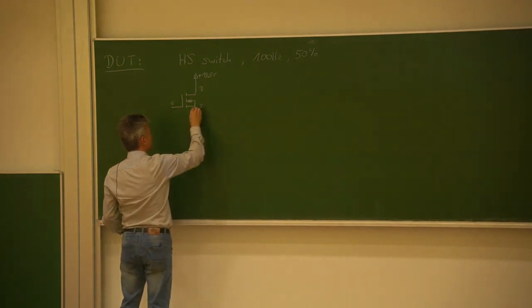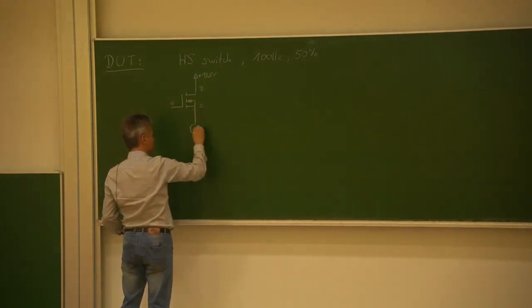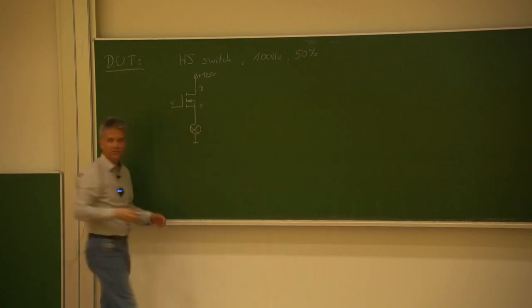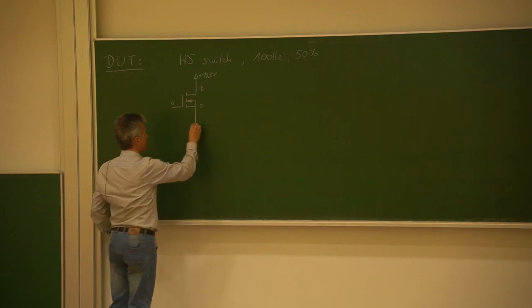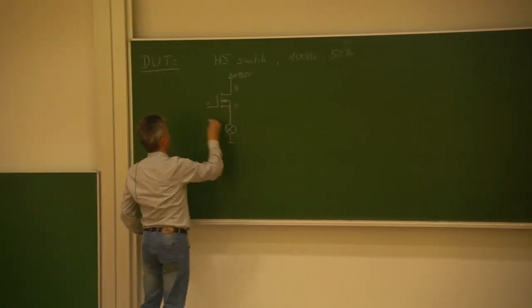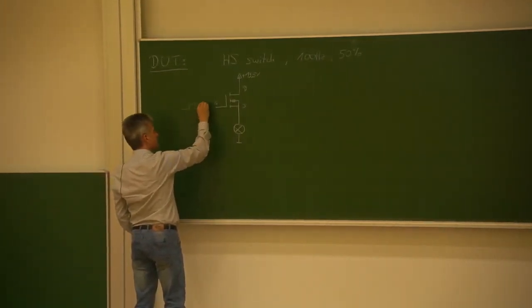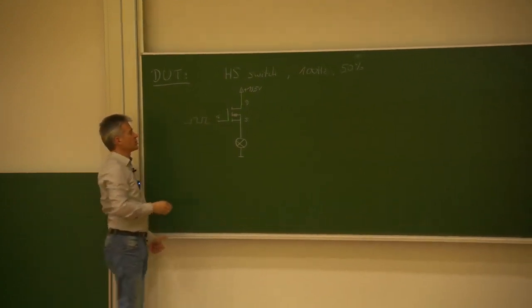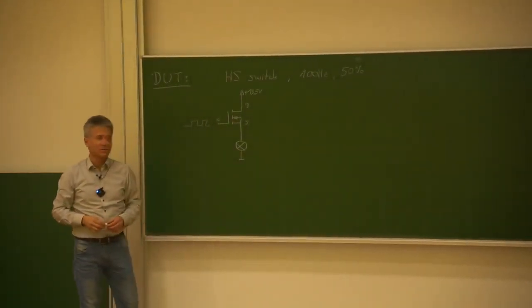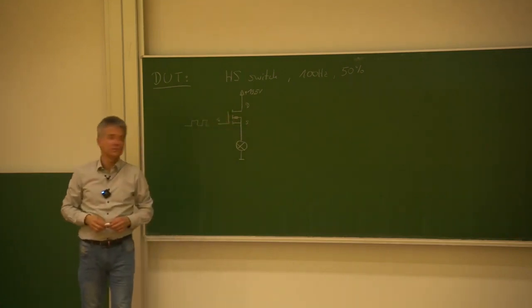Here we have connected somewhere our load — whatever the load is, a front light or whatever. Somewhere here we have a control module, a microcontroller or whatever, which is driving this 100 Hz signal. And then the switch is opening and closing at 100 Hz.